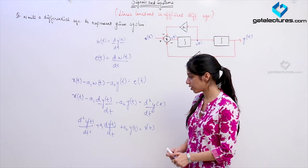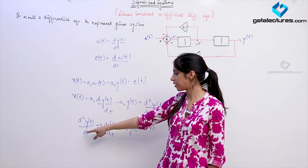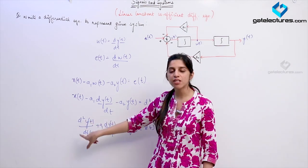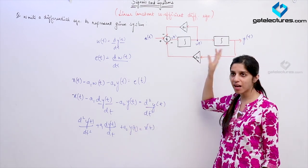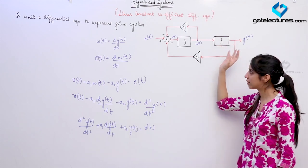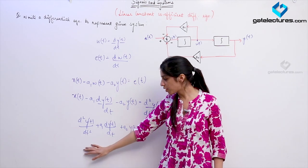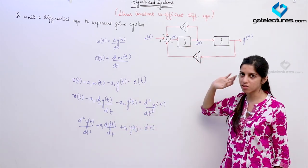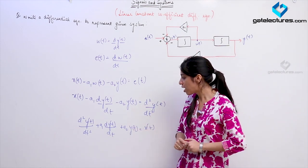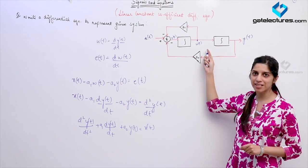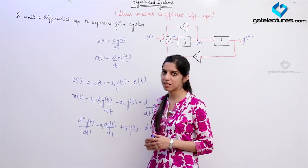The order of this differential equation is 2 — the highest degree of dY/dt is 2. The order of the differential equation depends on the number of integrators. If there were 3 integrators, the order would be 3. The order of the differential equation is always equal to the number of integrators in the system. With 2 integrators, the order is 2. This is how you represent any system using differential equations in continuous time, and difference equations in discrete time.